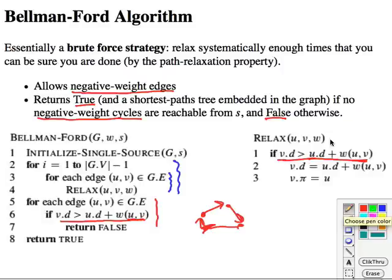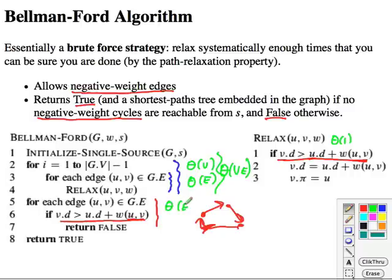But let's look at the complexity now. Relax, of course, is theta of 1. And here we have a for loop that's theta of V because it strictly goes from 1 to V minus 1. And then here we process all the edges inside that loop. So we multiply, so this overall is theta V times E. And then here we've got another for each edge, constant time theta of E. So the whole thing is theta of VE.